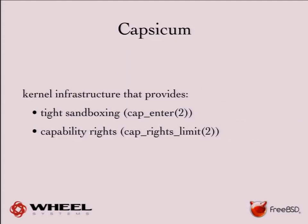Enter Capsicum. Capsicum provides two things. One is tight sandboxing: cap_enter() allows you to enter capability mode where you have no access to any global namespaces. You cannot open files, you cannot do internet connections. All rights or authorities you have are either inherited or delegated through Unix domain sockets. The second is capability rights, which let you limit file descriptors to only some basic functionality — for example, limiting an open file to only reads or only writes.